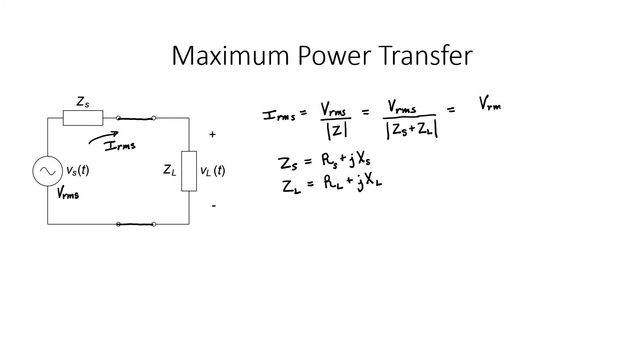We can find the magnitude of a complex number by taking the square root of the sums of squares of the real and imaginary components. The average power delivered to the load in this circuit will be I squared times the load resistance where this is an RMS value for the current. I've already found the RMS value for the current so I just need to square it in order to substitute it into this equation.